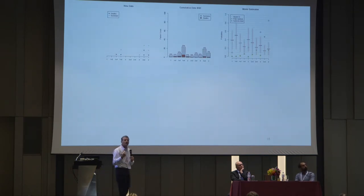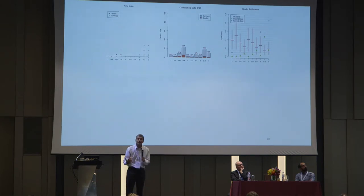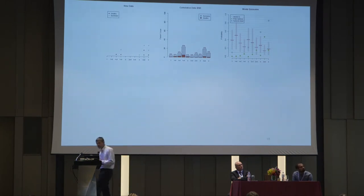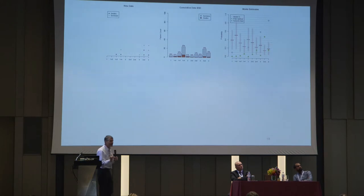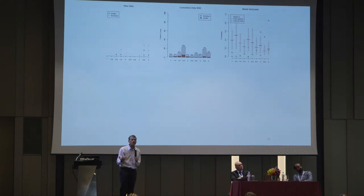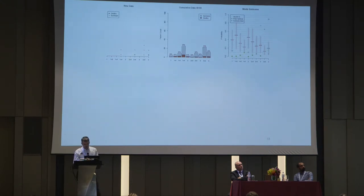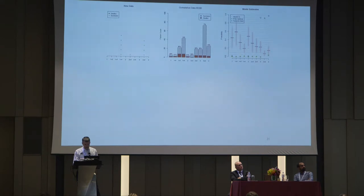Now we're at the point where we're starting to get mortality. We've done eight interim analyses and have relative probabilities that the different arms are the best. At this point, arm four and arm three are looking the best, and three plus four together is looking even better than either one individually. So now we're randomizing many patients to those arms, and we've almost given up on one and two — we've given one plus four, three plus four, and four the most. The trial continues with interims done weekly and randomizations updated.